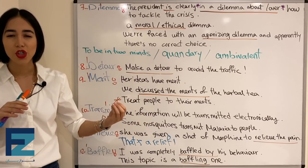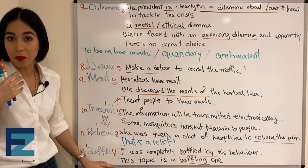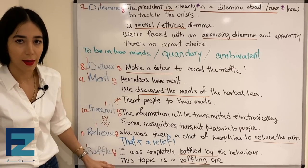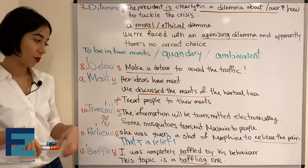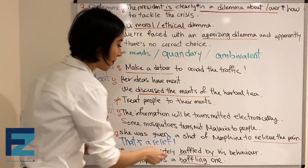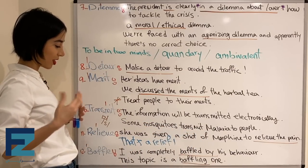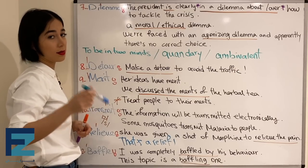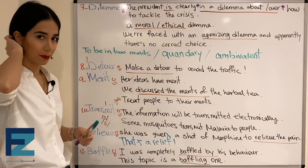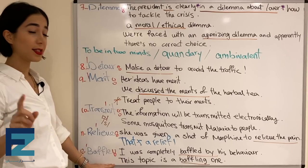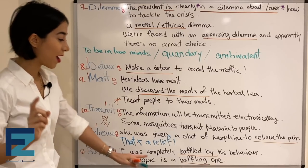Number twelve: baffle. Baffle means a kind of feeling where it is hard for you to understand something — like you're shocked or surprised by something. یعنی مبهوت شدن، شکه شدن. For example: 'I was completely baffled by his behavior.' یعنی من کاملاً از رفتار اون شکه شده بودم. To be baffled by something یعنی از چیزی مبهوت شدن. 'This topic is a baffling one.' یعنی این یک موضوع مبهوت‌کننده است — baffling is the adjective form.